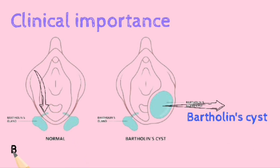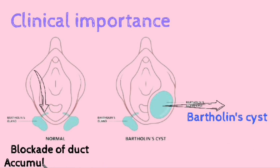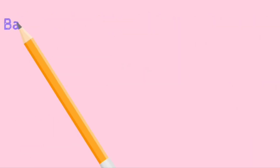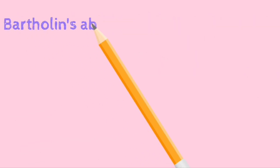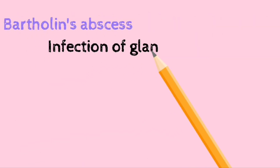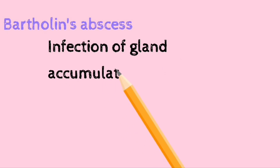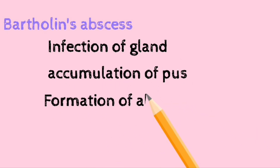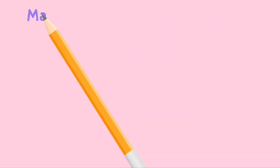Regarding clinical importance: this figure shows the Bartholin cyst, and this figure shows the normal Bartholin gland. If a blockage occurs in the duct, there is accumulation of secretion and formation of a cyst. Another important condition is the Bartholin abscess, which is an infection of the gland resulting in accumulation of pus and formation of an abscess.